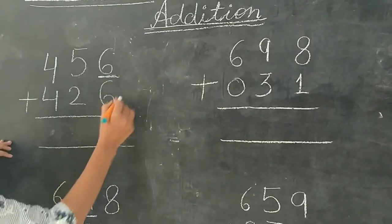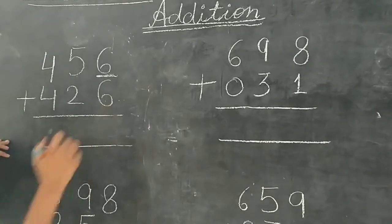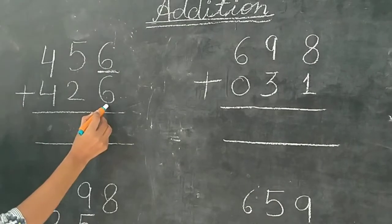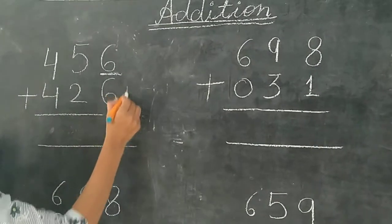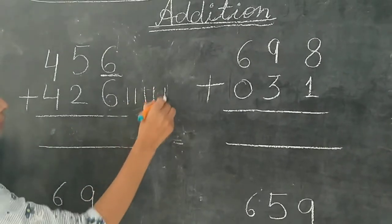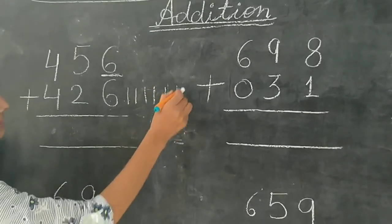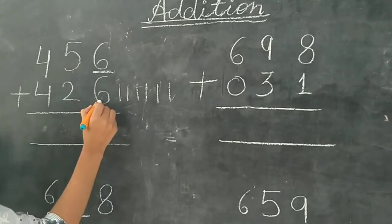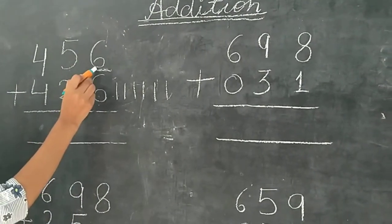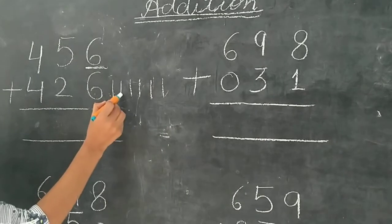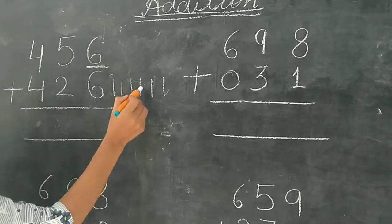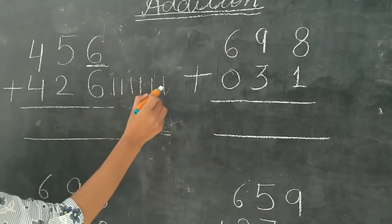So we draw a line. We draw 6 lines here: 1, 2, 3, 4, 5, 6. Now we count after 6. After 6: 7, 8, 9, 10, 11, 12.